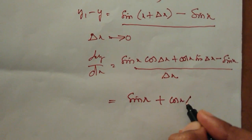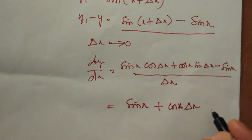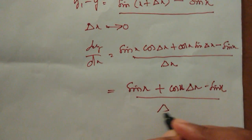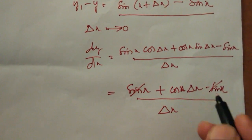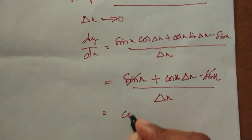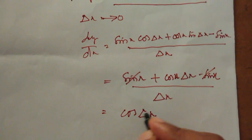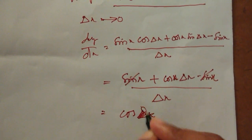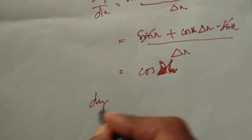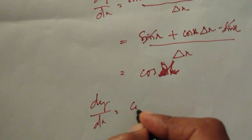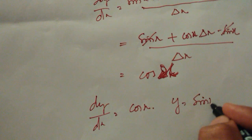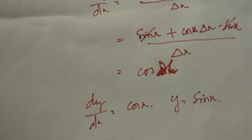Since delta x tends to 0, cos delta x tends to 1 and sin delta x can be written as delta x. So sin x cancels out, and we are left with cos x delta x by delta x — delta x cancels — and what we are left with is cos x. So dy by dx is equal to cos x where y is equal to sin x.